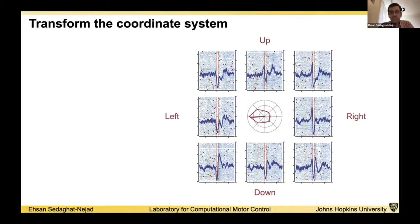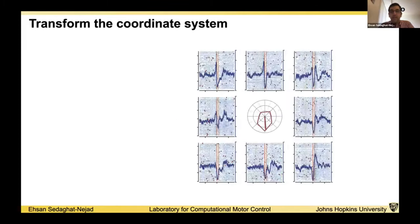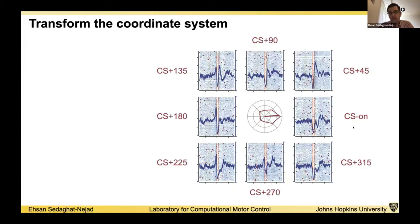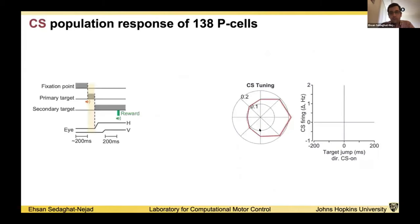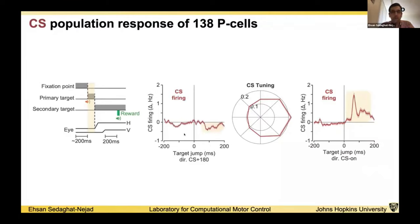So what we're going to do is use this CS tuning and redefine our absolute coordinate system. We're going to make a new relative coordinate system based on CS-on. Using this new coordinate system, the CS firing activity of over 138 P-cells shows an increase in the firing rate in the direction CS-on. Well, that's by definition. But what we didn't control for is the direction CS-180. And what we saw is that in direction CS-180, the activity of CS firing rate will actually go below baseline.